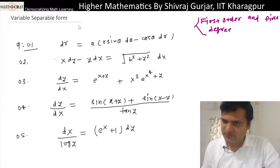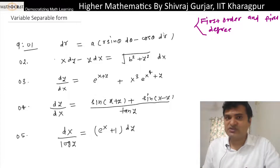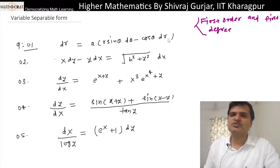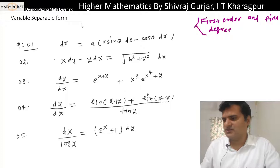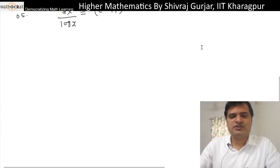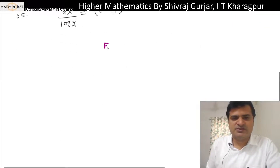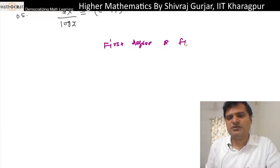In first order and first degree, there will be variable separable form, and then again there will be certain equations which can be reduced to this form by substitutions. This first case is the easiest one. Let us see what is a differential equation of first order and first degree.